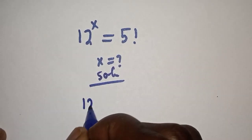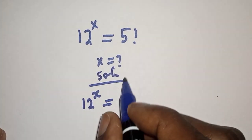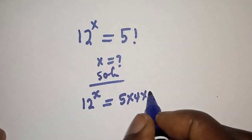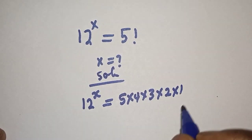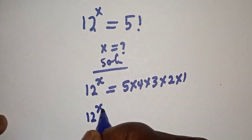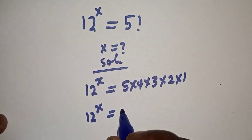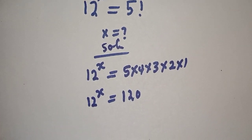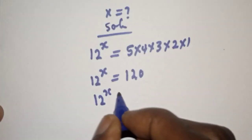Solution: we have 12 raised to power s is equal to 5 factorial, which can be written as 5 multiply by 4 multiply by 3 multiply by 2 multiply by 1. So 12 raised to power s is equal to 5 times 4 times 3 times 2, that is 120.